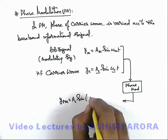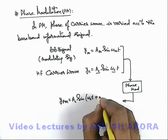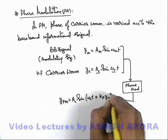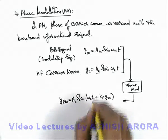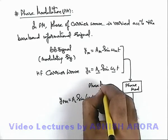A_c sine of omega_c t plus k_p multiplied by y_m, where y_m is the baseband signal and k_p we call phase modulation index.